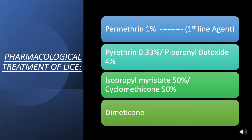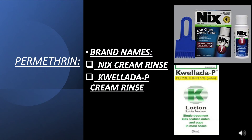Pharmacological treatment of lice includes: Permethrin 1% (first-line agent), Pyrethrin 0.33% with Piperonyl butoxide 4%, Isopropyl myristate 50%, Cyclomethicone 50%, and Dimethicone. Permethrin brand names are NIX Cream Rinse and Quellada-P Cream Rinse.